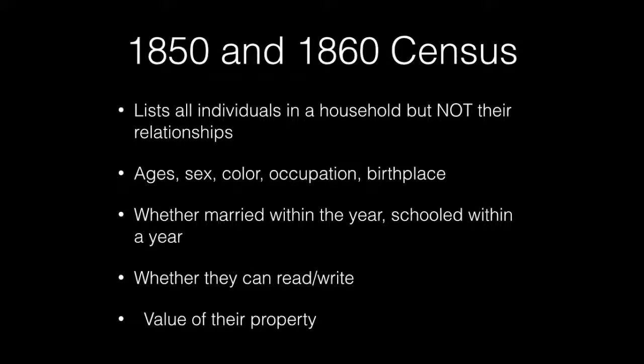The 1850 and 1860 Census lists all the individuals in a household but does not show their relationships. It shows the age, sex, color, occupation, and birthplace, whether they were married within a year or schooled within a year, and whether they can read or write, and the value of their property.